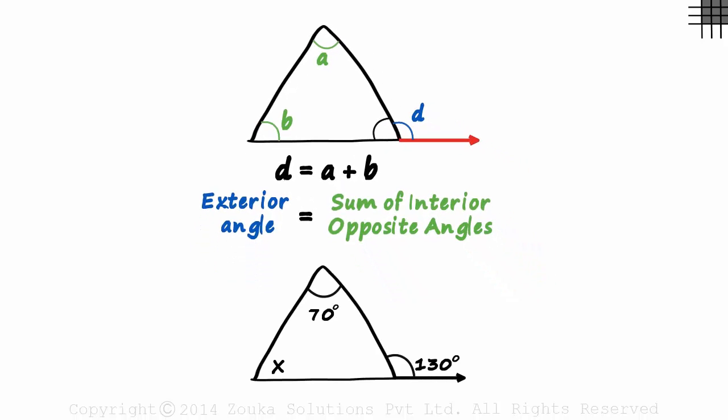Take this example for instance. We are asked to find the value of X. This angle here is the exterior angle and it will equal the sum of X and 70 as they are its interior adjacent angles.